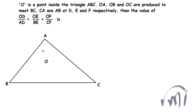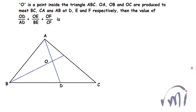Let's see what happens. So basically I have to join point A with O and produce it till BC, and let me call this point as point D. Then draw the line OB till line AC and call this point as E. Similarly, draw another line OC and produce it till line AB and call this point as F. Then we have to find the value of OD/AD plus OE/BE plus OF/CF.